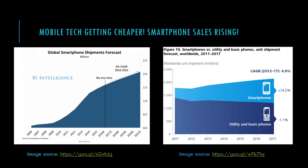As we can see in the images, more smartphones are being shipped and are outselling utility and basic phones. This could be because of a drop in the prices of mobile technology.